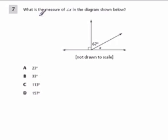So, in this case, it says, what is the measure of angle X in the diagram shown below? Well, here you can tell that we have this straight line, and this symbol right here, it looks like a square, means that's a 90 degree angle.